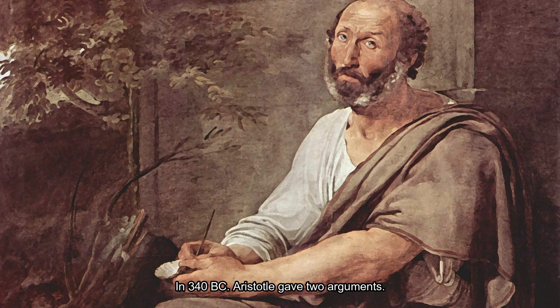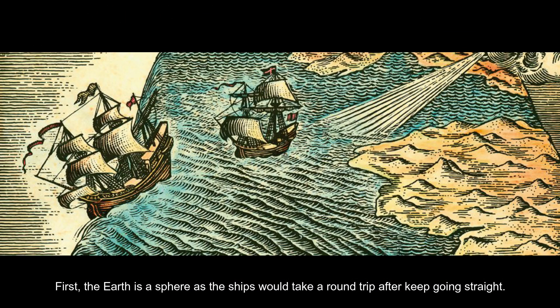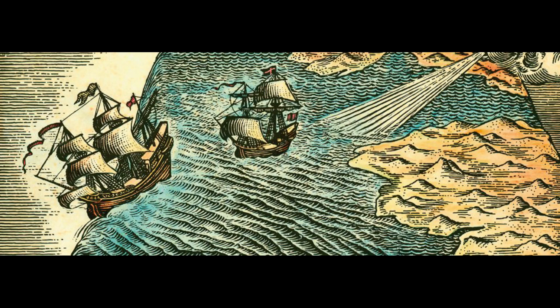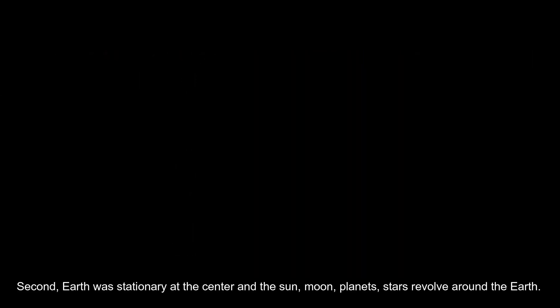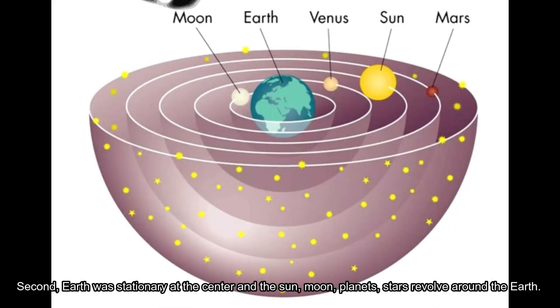In 340 BC, Aristotle gave two arguments. First, the Earth is a sphere, as ships would take a round trip after keep going straight. Second, Earth was stationary at the center and the sun, moon, planets, and stars revolve around the Earth.